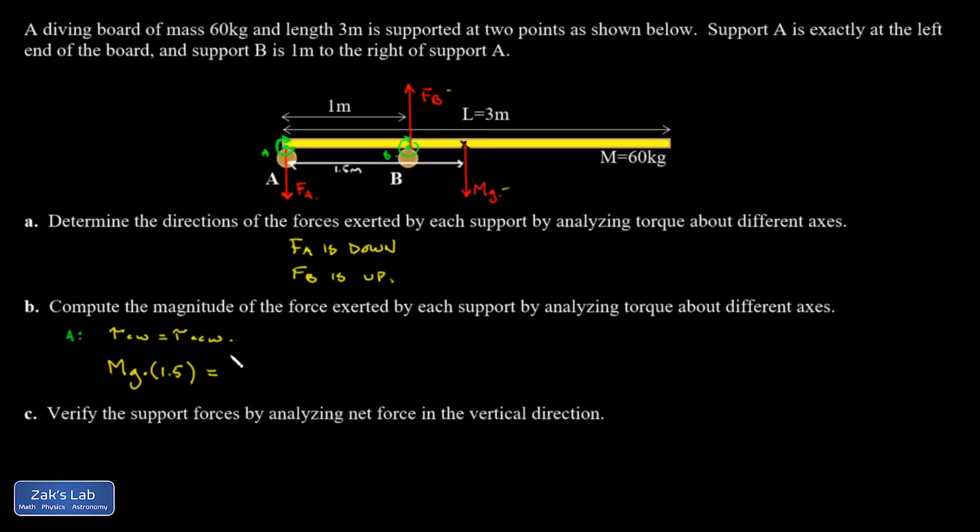And then my counterclockwise torques, well, FB is exerting a counterclockwise torque through a lever arm of one meter. So then I can plug in my numbers. The mass of the whole thing is 60 kilograms. G is 9.8. Then I have 1.5 equals FB times one, so I don't even have to write the one there. And I get that the force exerted by support B is 882 newtons.